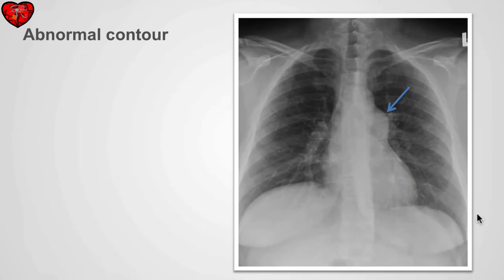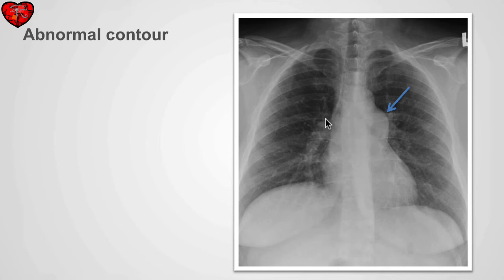In this case, we see an abnormal left contour of the heart. Inferiorly we have the left atrium, then the auricle of the left atrium, and superior to this we have the pulmonary outflow tract, which in this case is enlarged. Enlargement of the pulmonary outflow tract can sometimes be a normal variant, especially in young teenage females. However, we also see enlargement of the pulmonary arteries, and this is a case of pulmonary hypertension.